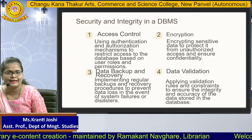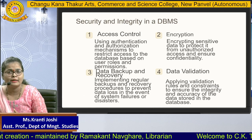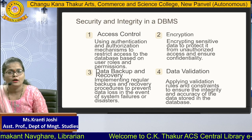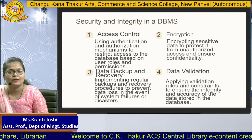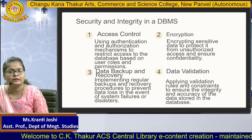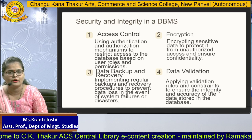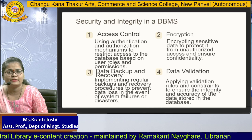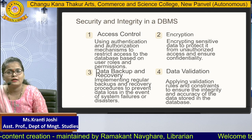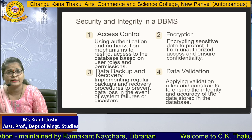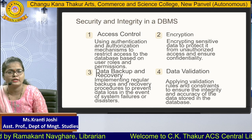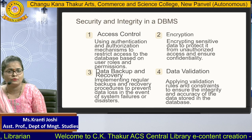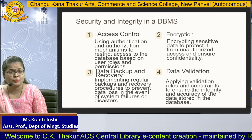Data can only be read by the sender and receiver because they both hold the public and private keys. The third mechanism is data backup and recovery — implementing regular backup and recovery procedures to prevent data loss in the event of system failure or disaster. DBMS provides the option of data backup and recovery in case of system failure. The fourth mechanism is data validation — applying validation rules and constraints to ensure the integrity and accuracy of data stored in the database. By applying validation, you can ensure that users input only the correct data.